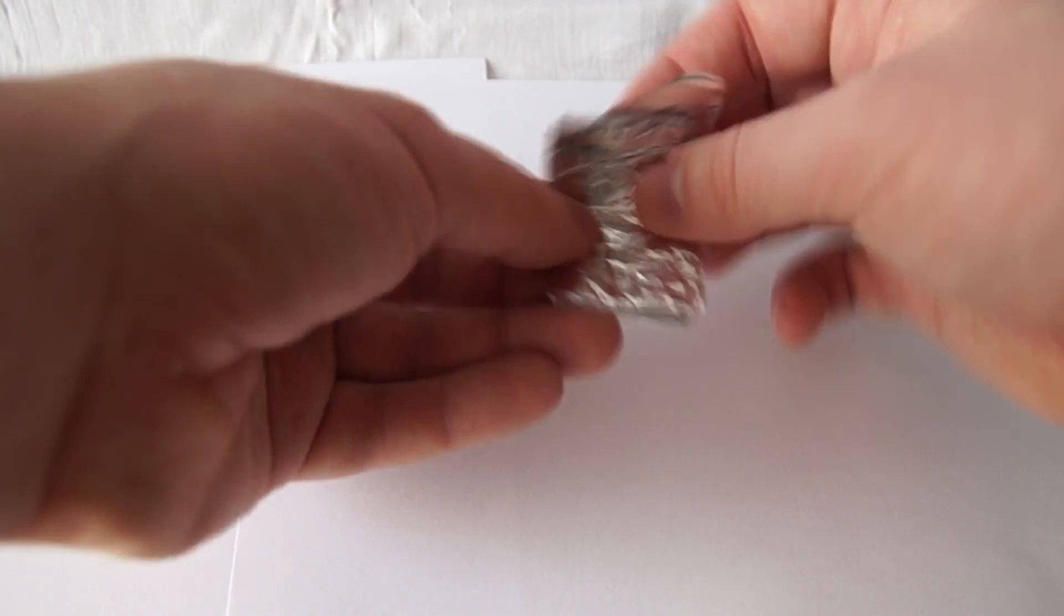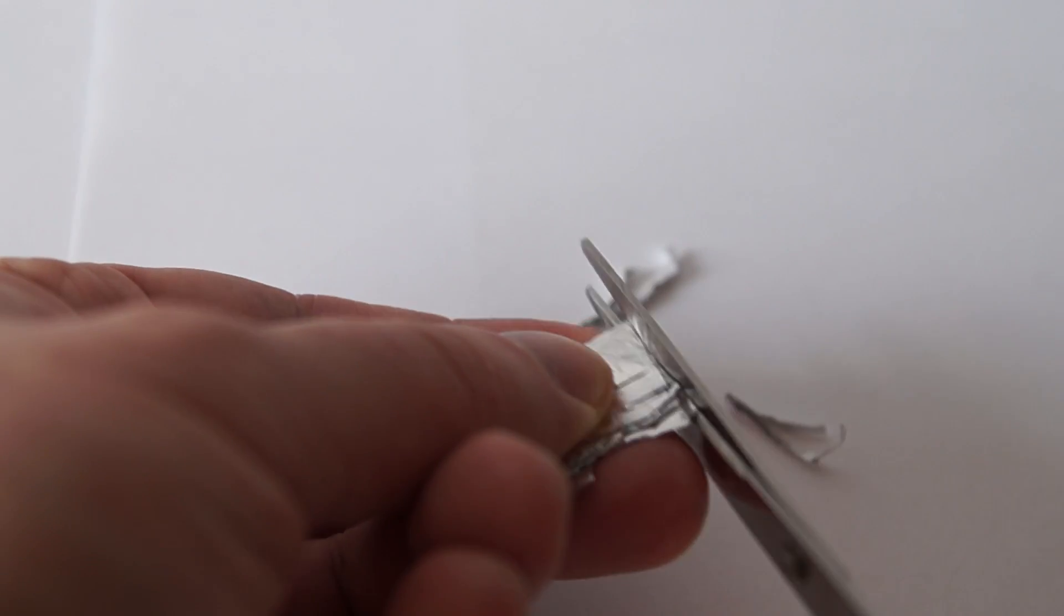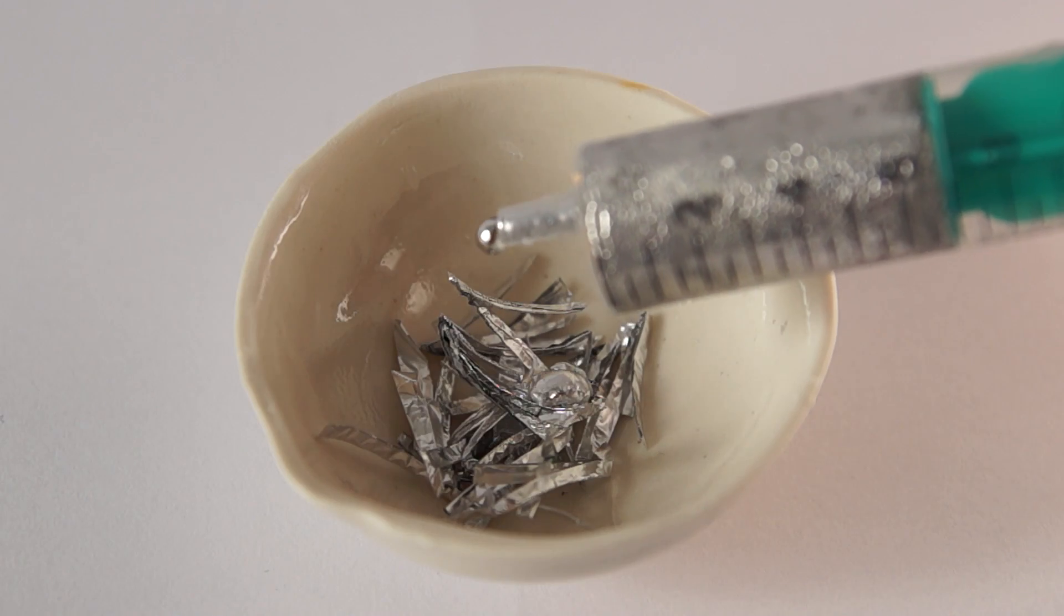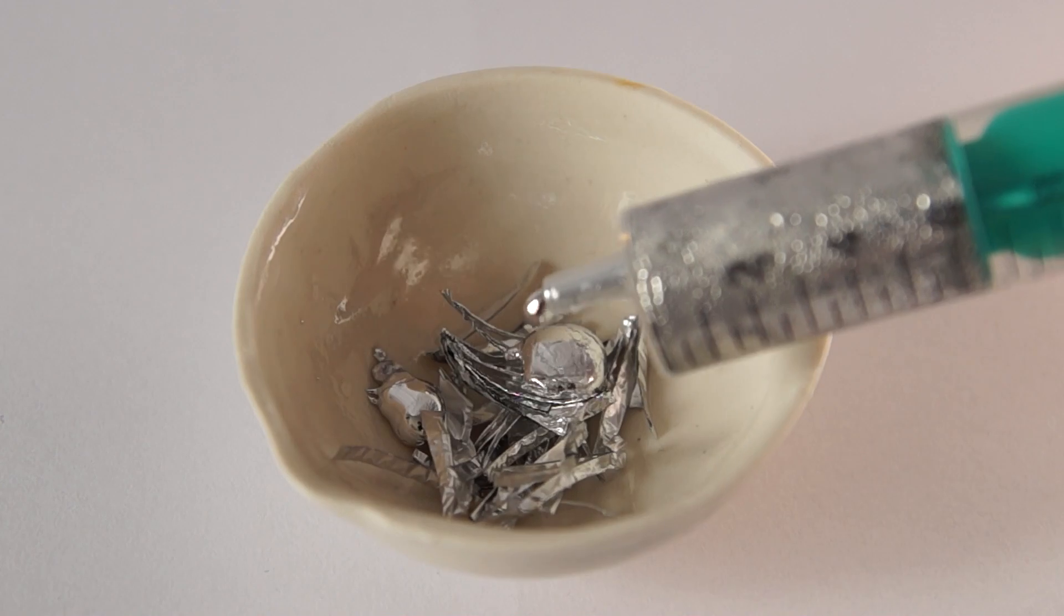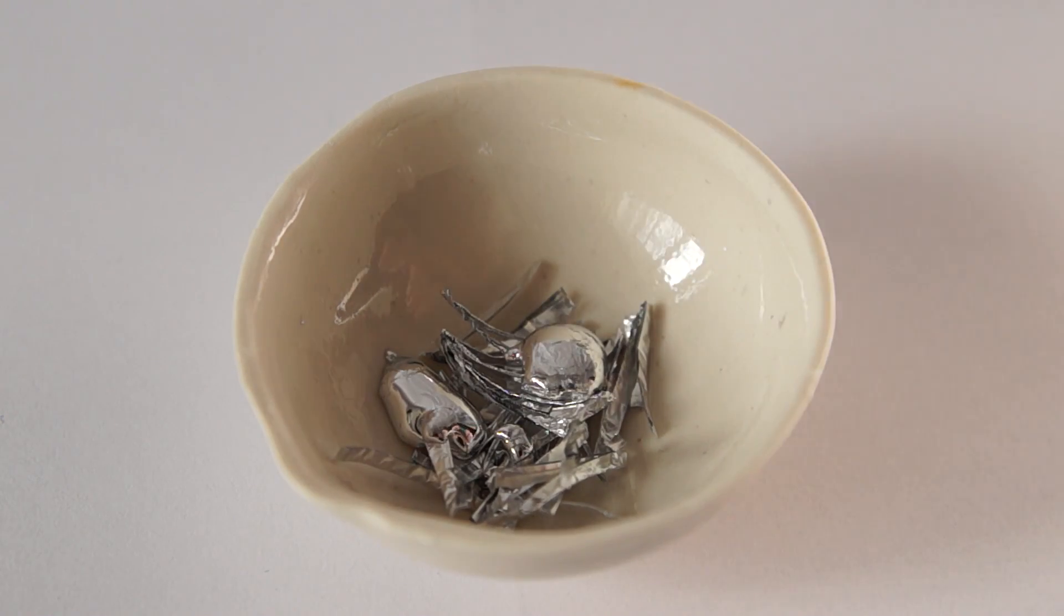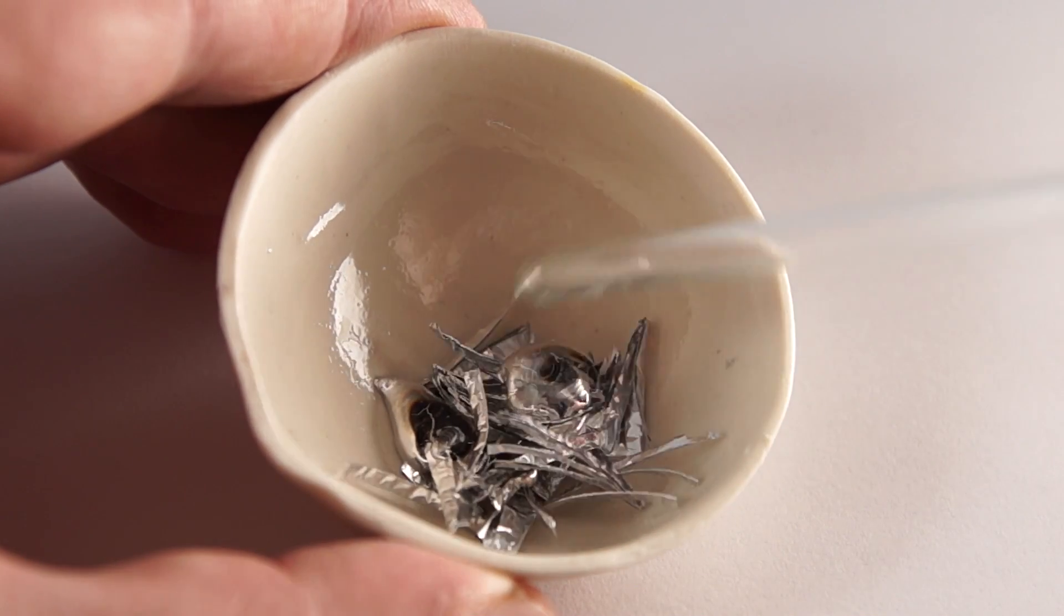Now let's conduct another experiment. Take an aluminum foil and fold it several times. Next, we need to cut it into small pieces and add a few drops of liquid gallium to these pieces. Now let's start making aluminum and gallium alloy by stirring them.